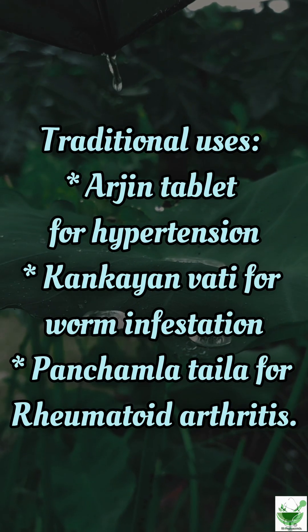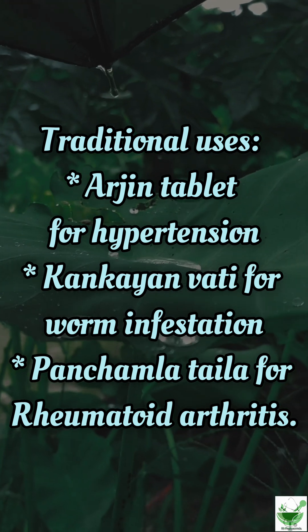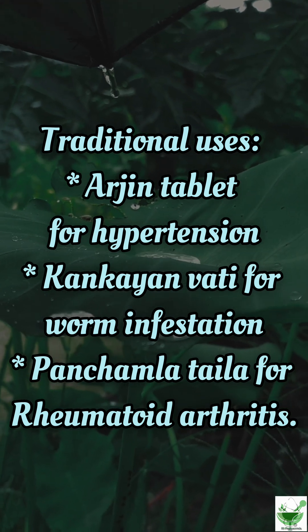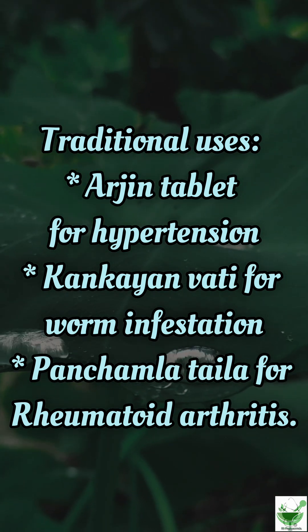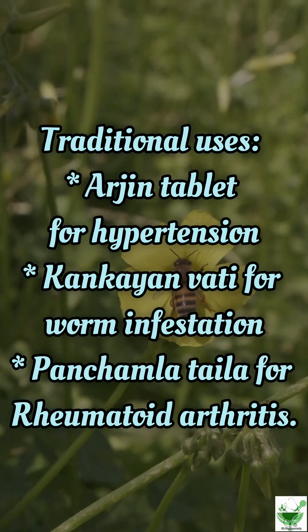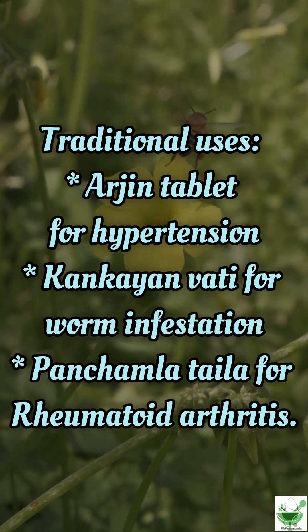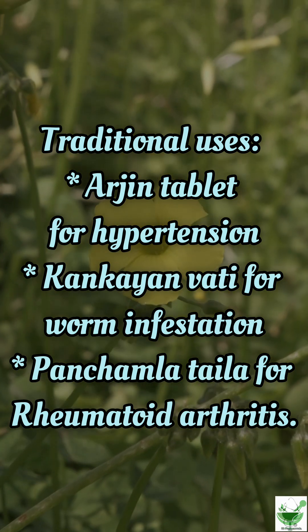Traditional uses: Arjeen tablet for hypertension, Kankayan vati for worm infestation, Panchamla tayla for rheumatoid arthritis.